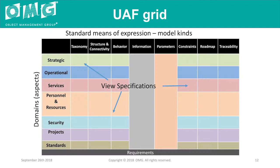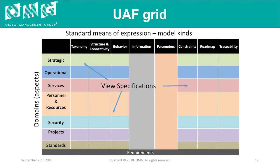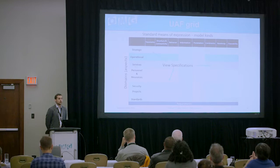Looking at the UAF grid, which shows how UAF is organized into different view specifications: the rows are called domains and every column is a different model kind. Every cell in this framework is a view specification — or viewpoint. We define a metamodel for every different viewpoint, so you can double-click on a cell like 'operational behavior' and find the main concepts and relationships you need to build that specific view.